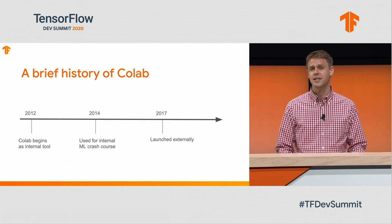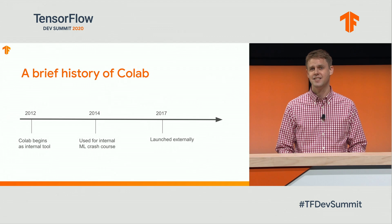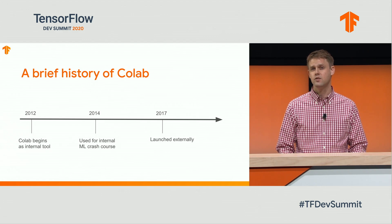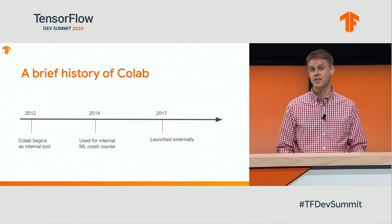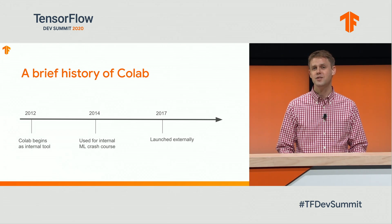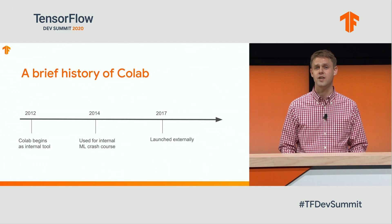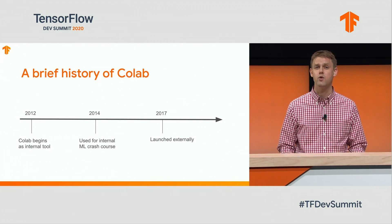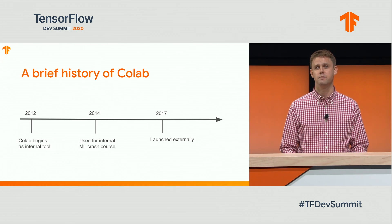CoLab started in 2012 as an internal tool for data analysts. In 2014, we started using it for our internal machine learning crash course — this is actually where a lot of Googlers first learned TensorFlow. In 2017, we launched it publicly. We wanted the whole world to have access to the same great tool that Googlers were using to get their work done.